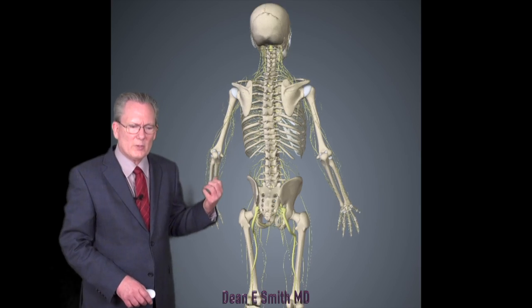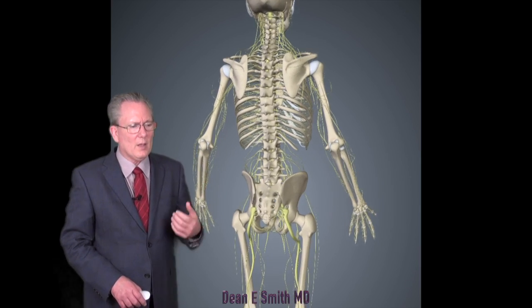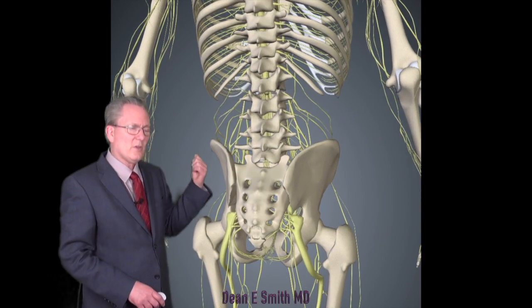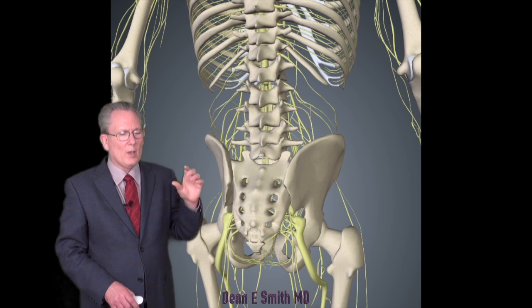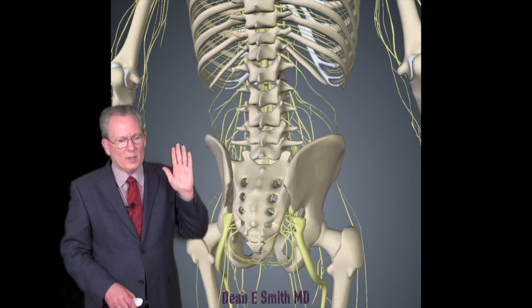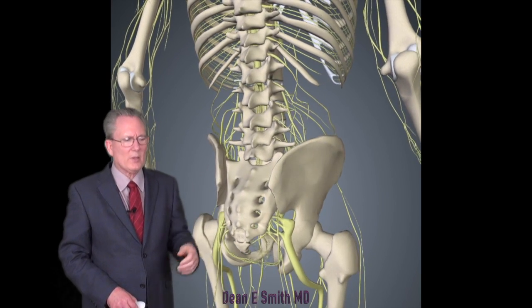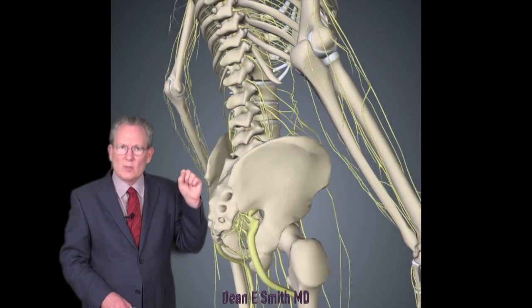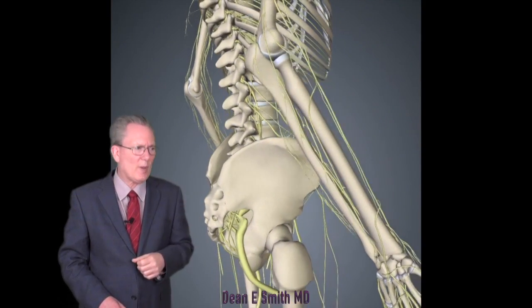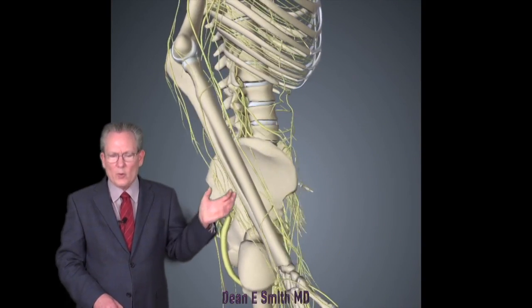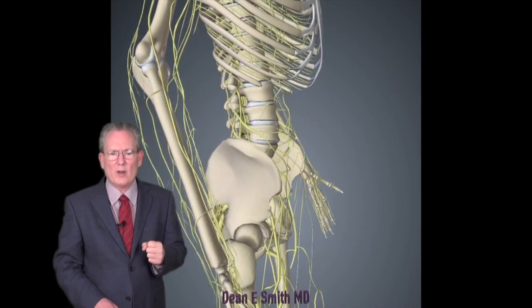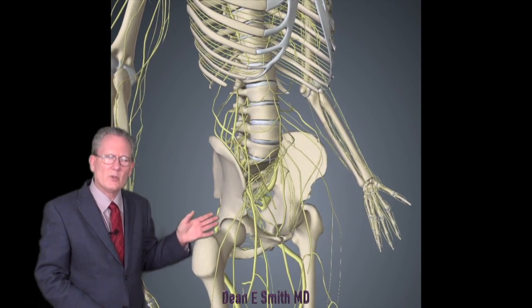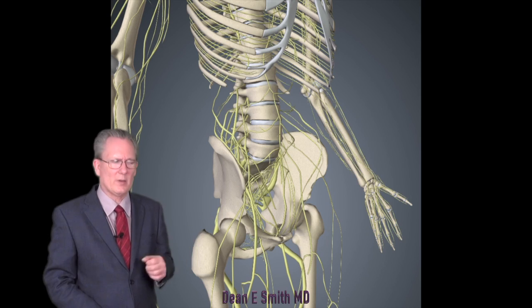In the case of the lumbar spine, what we have typically done is made incisions on the back. We cut the muscle, strip the muscle, remove the lamina, which is the back half of the spinal cord. We find the nerves, move those out of the way — all in order to get to the disc, which is actually closer to the front.